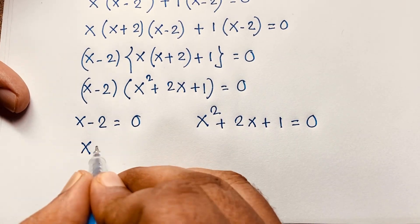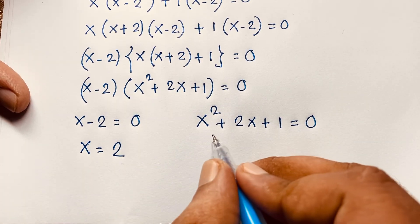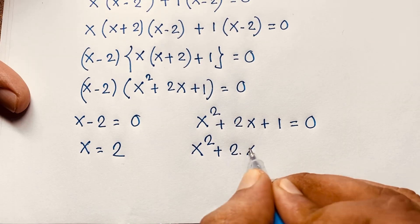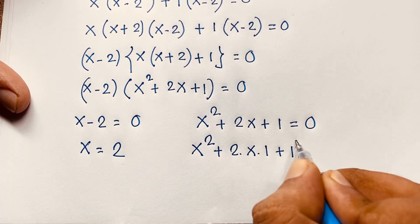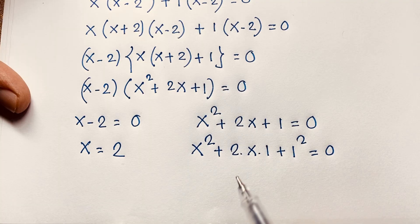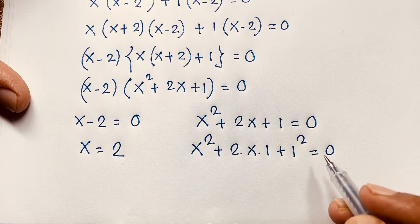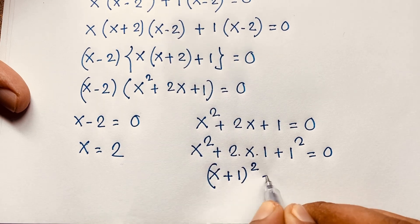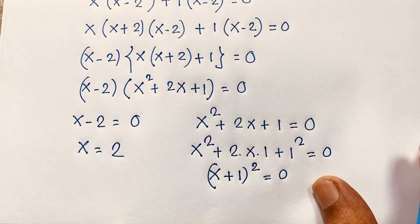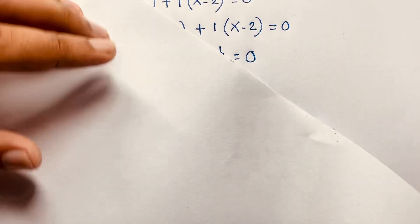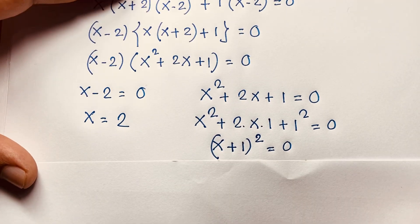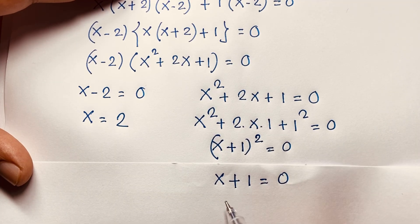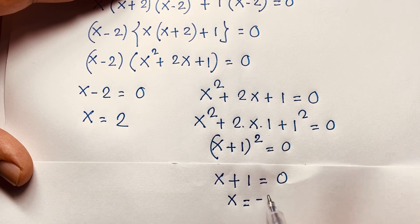From the first case, x equals positive 2. For the second case, x squared plus 2x plus 1 equals 0. I recognize this as a perfect square: x squared plus 2 times x times 1 plus 1 squared, which equals (x plus 1) squared equals 0. Taking the square root of both sides, x plus 1 equals 0, so x equals negative 1.